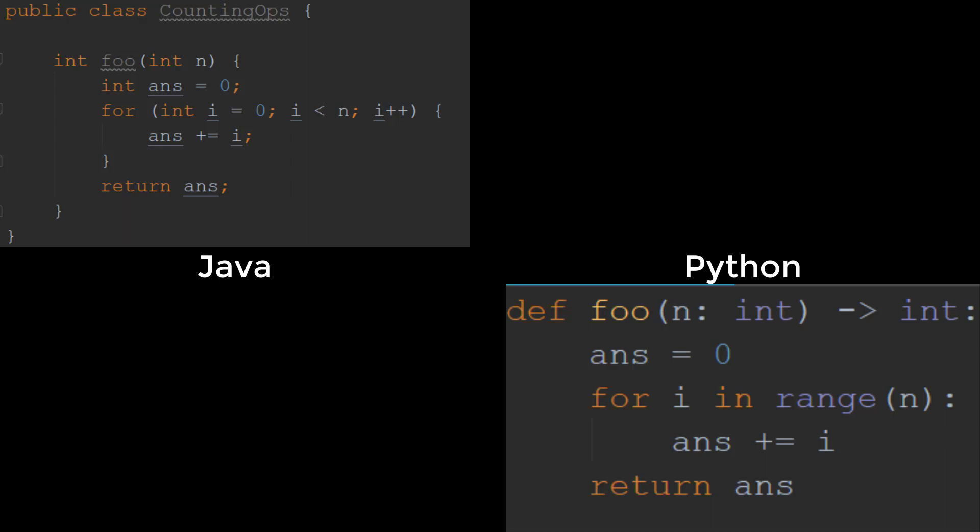Hopefully you've realized that this code adds all the numbers from 0 to n-1. Now what I do want to ask in this video is how fast is this code, rather than what does it do? But before we answer that question, let's introduce a new way of writing code, one that computer scientists, mathematicians, and everybody else can also understand.